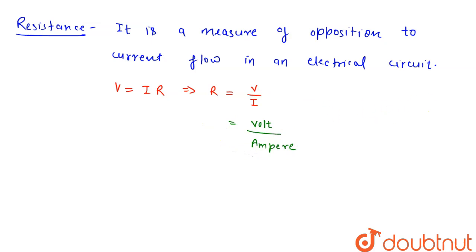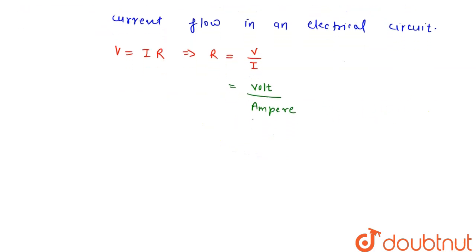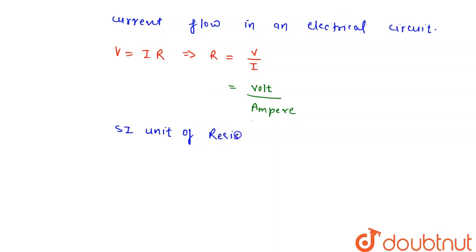So the SI unit of resistance will be equal to volt per ampere.